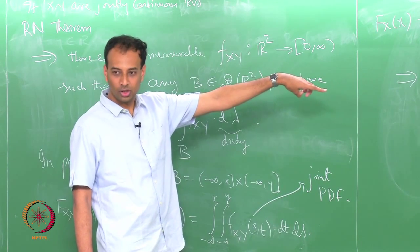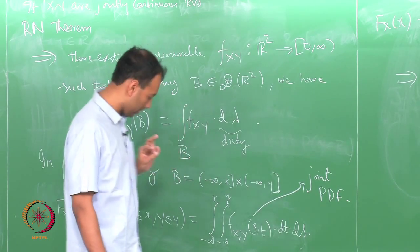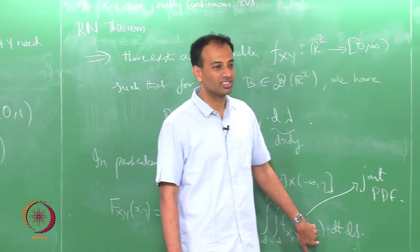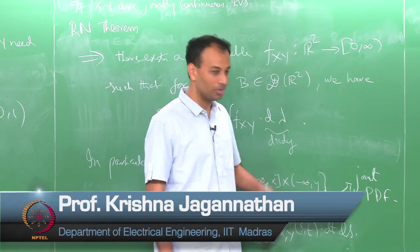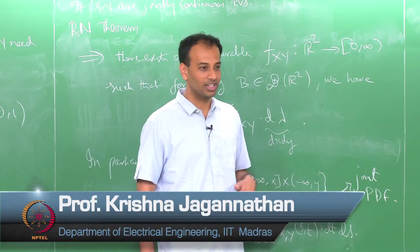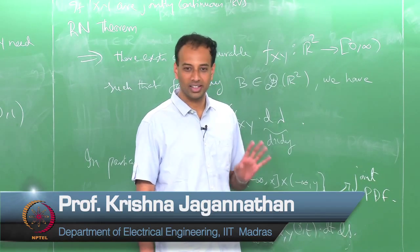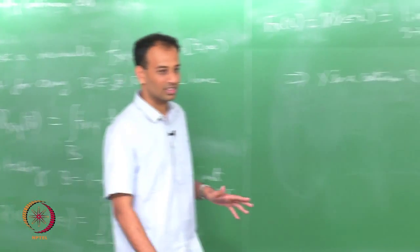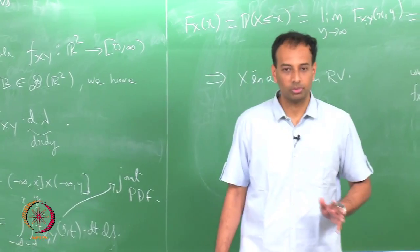What we can show is that if X and Y are jointly continuous and independent, the joint PDF must necessarily factorize into the product of the marginal PDFs. Conversely, if the joint PDF factorizes, then X and Y are independent. That is something we will start in the next class. I will stop here. Thanks.